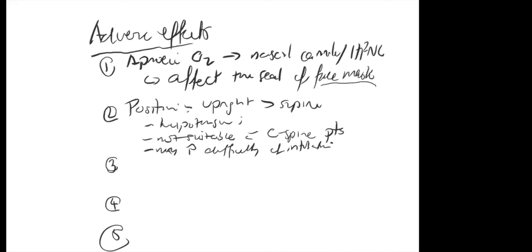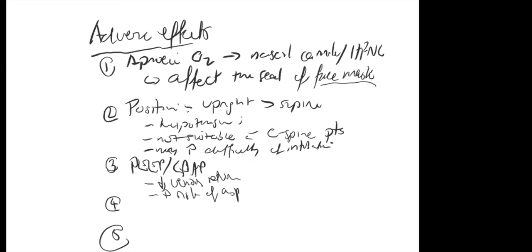PEEP or CPAP is another method for preoxygenation. The risks: decreased venous return, and it actually increases the risk of aspiration if the patient vomits, because PEEP pushes air in — so if they vomit, you're pushing that back in. Running FiO2 at 100%: adverse effects include absorption atelectasis.